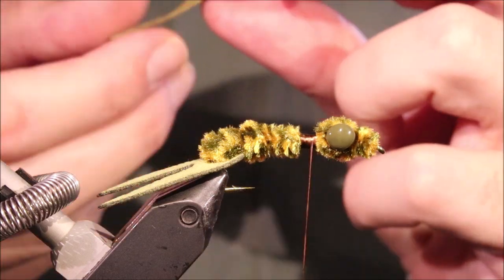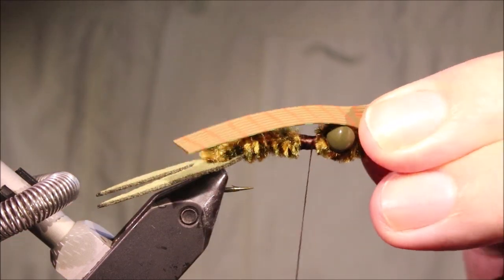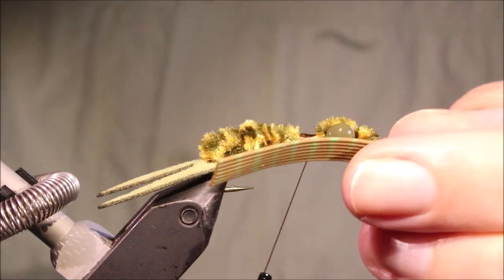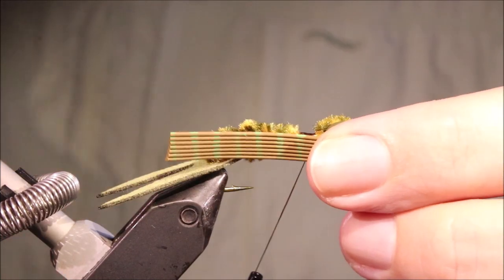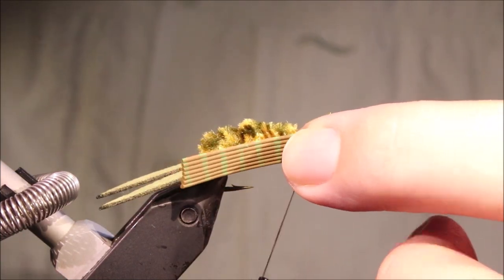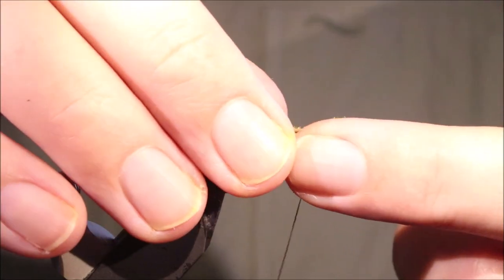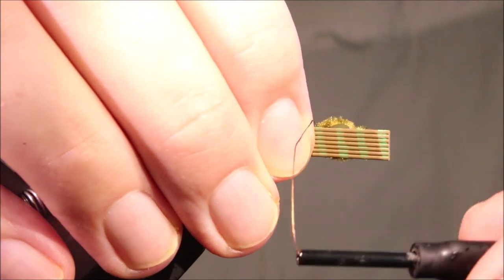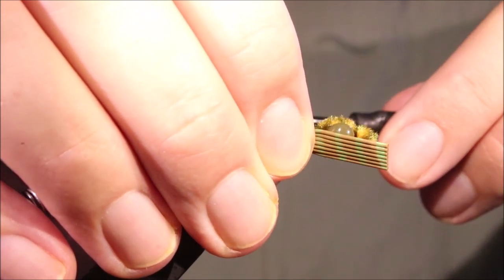I'm using these barred olive, they're orange on one side, green on the other, but it doesn't matter. And I've got a strip, just slightly longer than the hook, and it's seven wide, seven legs wide, so I'm going to catch it on the side.